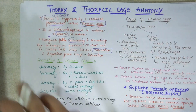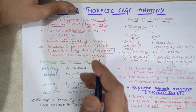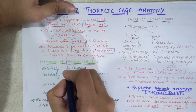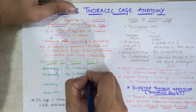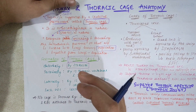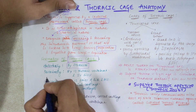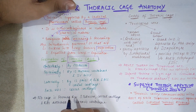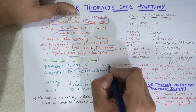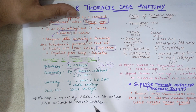When we talk about the formation of the thoracic cavity: the anterior portion is formed from the sternum, which is a bone. The posterior portion is formed by the thoracic vertebrae, from T1 to T12.